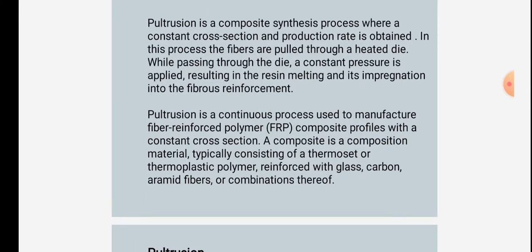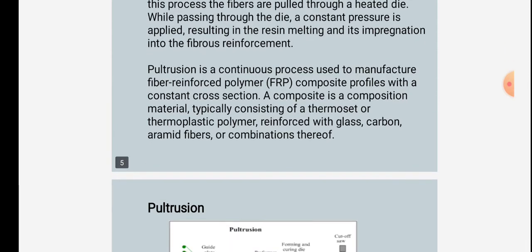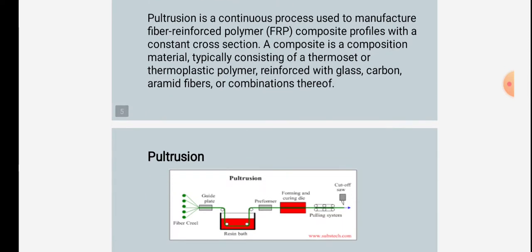Pultrusion is a continuous process used to manufacture fiber-reinforced polymer composite profiles with a constant cross-section. A composite is a material typically consisting of a thermoset or thermoplastic polymer reinforced with glass, carbon, or aramid fibers, or combinations thereof.